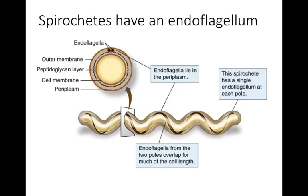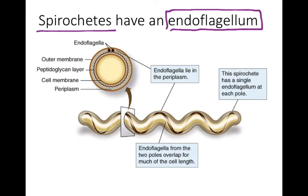There is one other flagellar structure not represented on the previous slide: the endoflagellum. An endoflagellum is found underneath the outer membrane of a bacterial cell and is only associated with spirochetes — this is one distinguishing feature between spirochetes and spirillum, as spirillum don't have endoflagella. Endoflagella are attached to the poles of the cell and undergo clockwise or counterclockwise movement to help the microorganism move, with one endoflagellum at each pole of the spirochete.